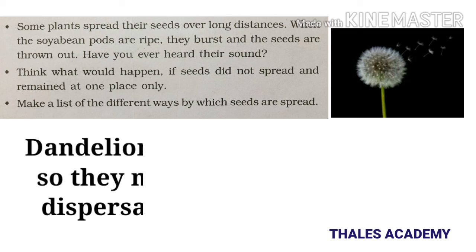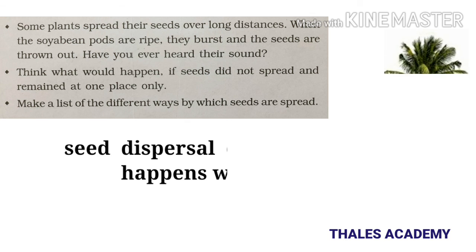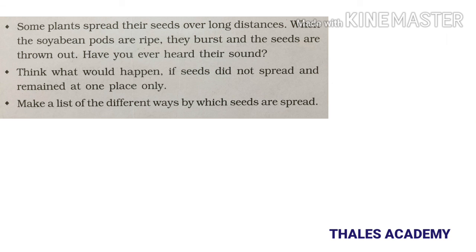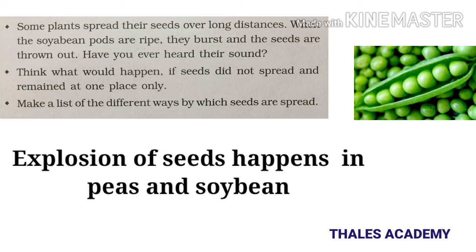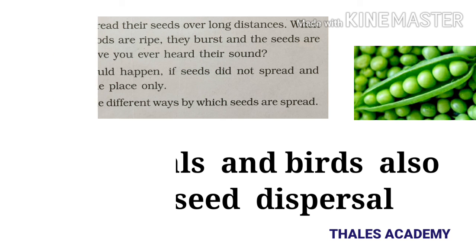The main agents of seed dispersal are wind, water, explosion, and animals. Dandelion seeds are very lightweight so they move with wind. The seed dispersal of coconut trees happens through water - coconuts move into other places and grow there. For explosion dispersal, peas or soybeans burst when ripe and seeds are thrown out, spreading to another place. Fruit-eating animals and birds also help in seed dispersal.